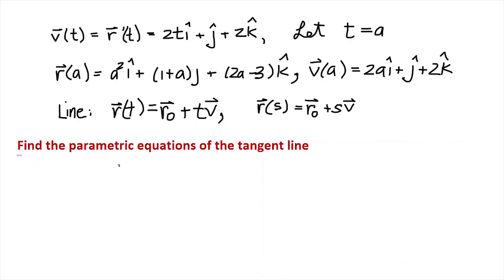So I want to write the parametric equation of that tangent line and let's do the x component first. So x is going to equal a², that's the r₀ component of x, plus s times 2a. That's the v part.